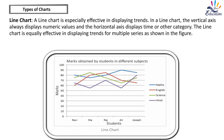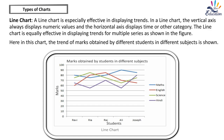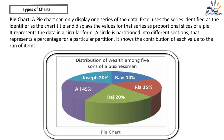Line chart: A line chart is especially effective in displaying trends. In a line chart, the vertical axis always displays numeric values and the horizontal axis displays time or other category. The line chart is equally effective in displaying trends for multiple series. In this chart, the trend of marks obtained by different students in different subjects is shown.